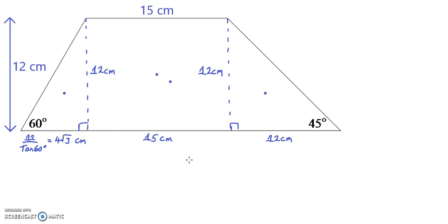I am going to denote the centroid of the left right angle triangle as C dashed, and now I need to find the coordinates of C dashed relative to this bottom left vertex, which I am going to let be the origin (0, 0). For a right angle triangle the x coordinate of the centroid is 2 thirds along the base distance. So the x coordinate of C dashed will equal 2 thirds of 4 root 3, giving an x coordinate of 8 root 3 over 3.